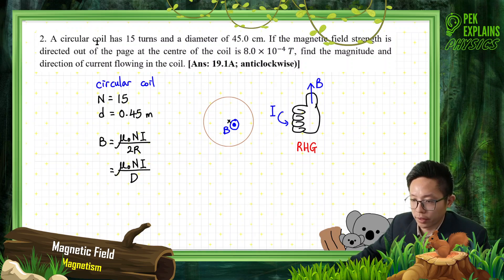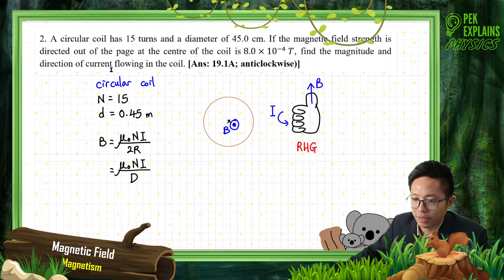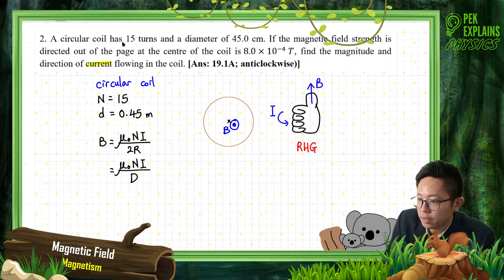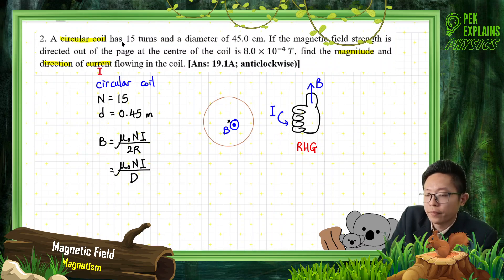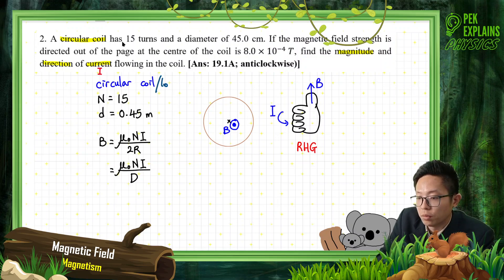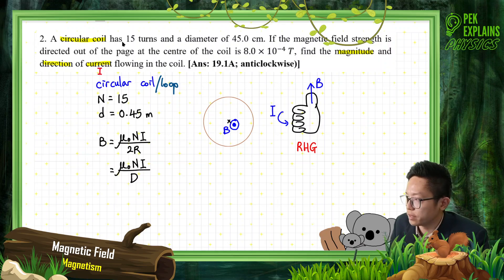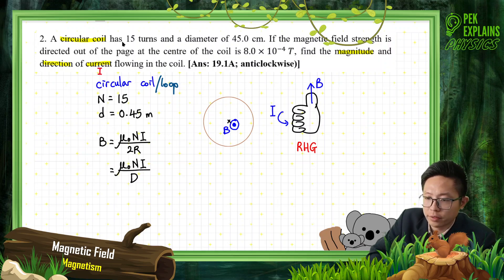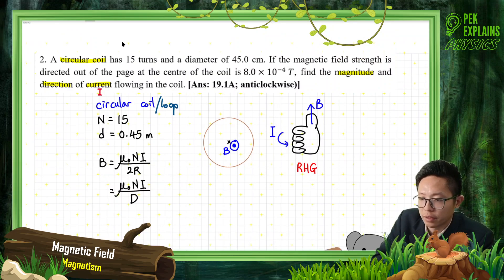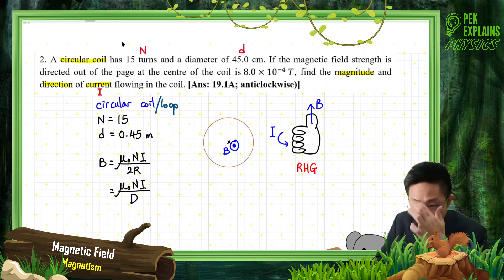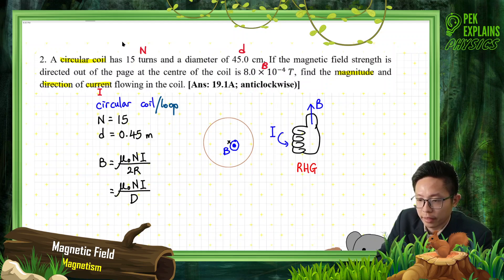A circular coil has 15 turns and a diameter of 45 cm. The magnetic field strength directed out of the page at the center of the coil is a given value. We need to find the magnitude and direction of the current flowing in the coil. This is a circular coil — sometimes called a coil, sometimes called a loop. It has 15 turns (N), a diameter, and a magnetic field strength directed out of the page.